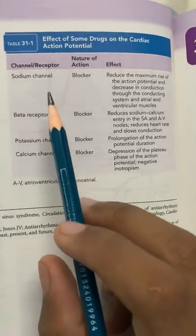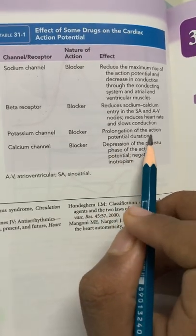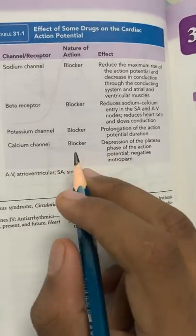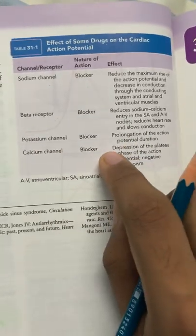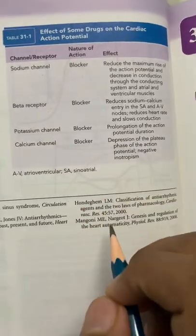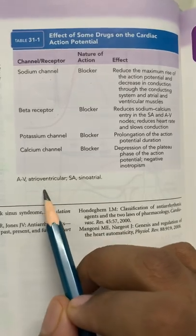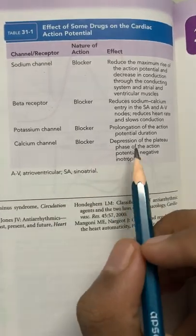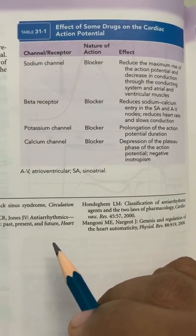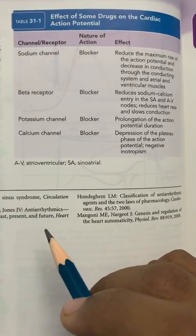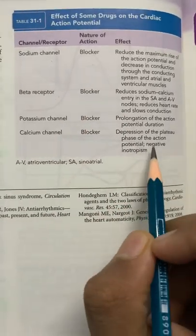Potassium channel blockers prolong the action potential because potassium efflux is what causes the action potential to return to the RMP. Blocking potassium channels continues the plateau phase, taking more time for repolarization. Calcium channel blockers depress the plateau phase of the action potential. Since calcium is responsible for the Frank-Starling law and increased inotropy, blocking calcium channels reduces calcium influx, causing negative inotropism.